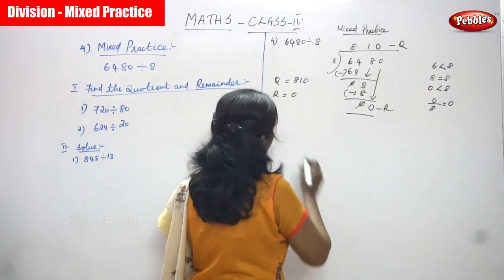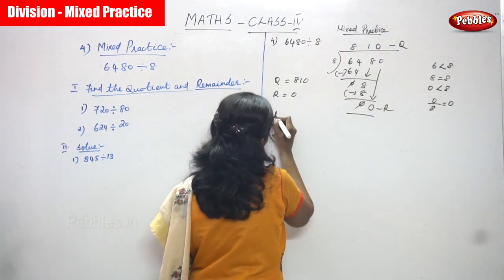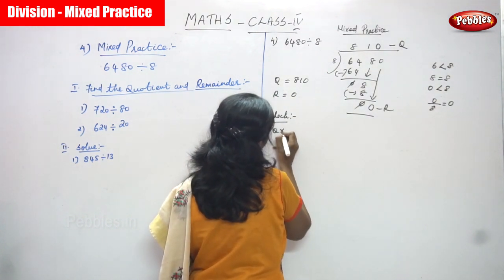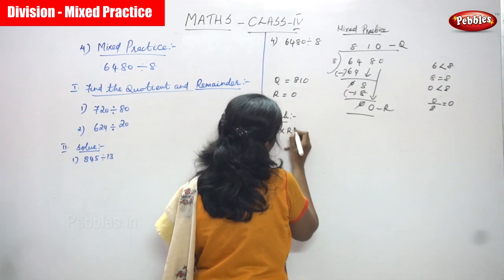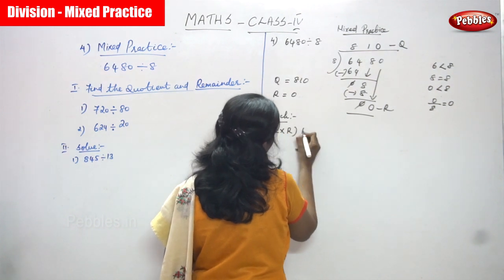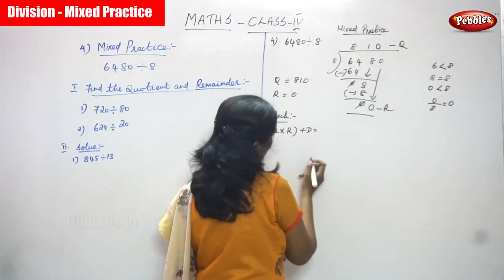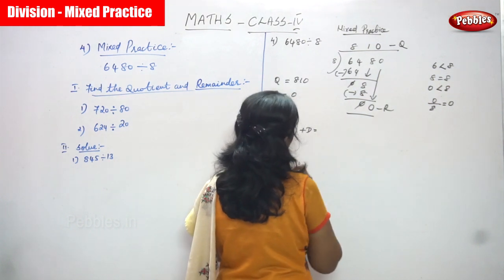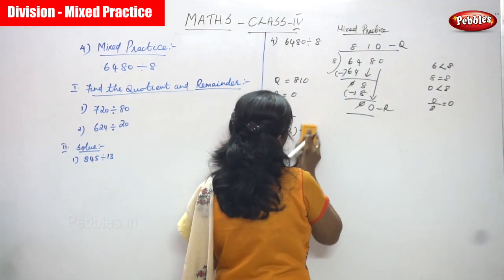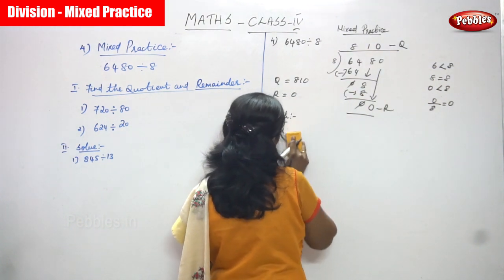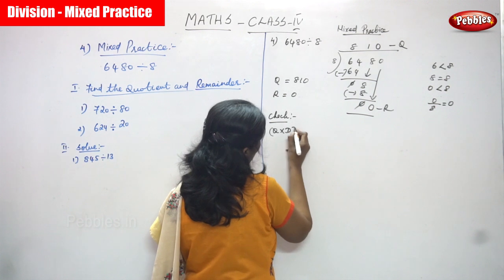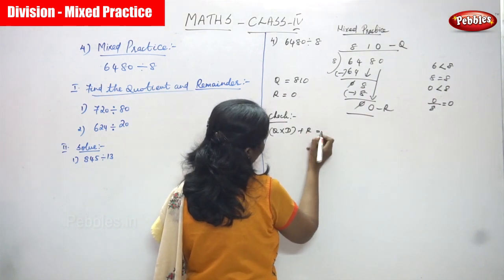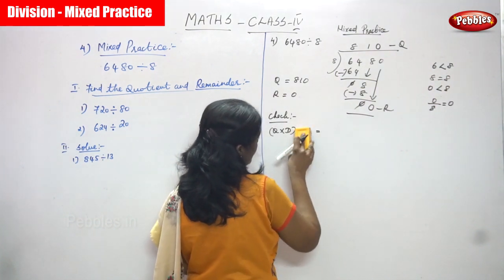So the 0 goes to the top. This is the quotient and this is the remainder. Quotient is equal to 810 and remainder you can get is 0.